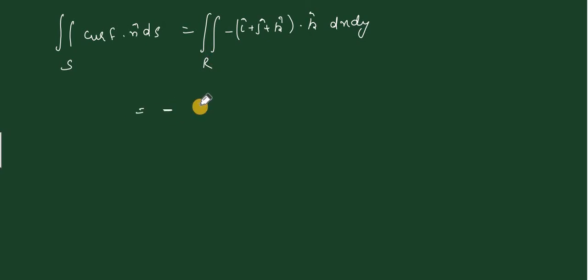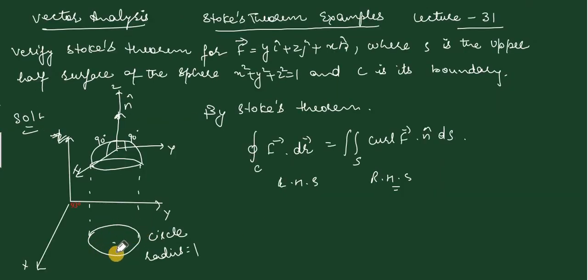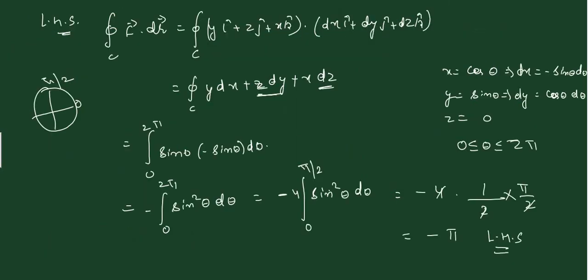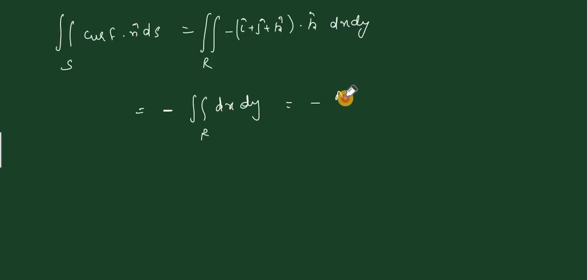Taking minus common and evaluating the dot product with k cap gives 1. Region R is the circle of radius 1 on the xy plane. This equals minus double integral over R of dx dy, which is minus the area of circle of radius 1, so minus pi r squared equals minus pi times 1 squared equals minus pi. This is the right hand side.